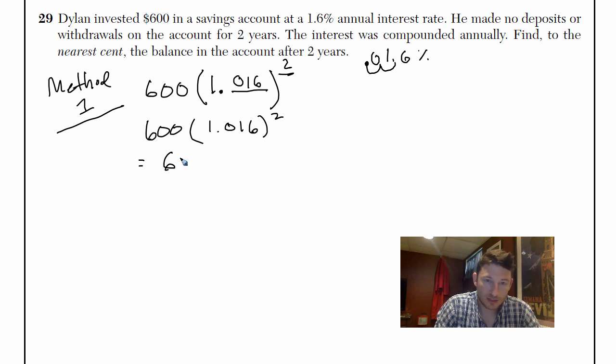And we get 619.3536. And they want us to round to the nearest cent. So that's $619.35.